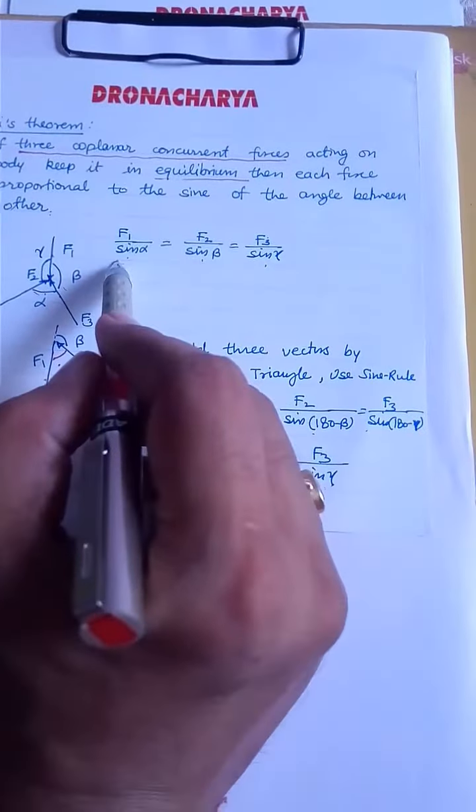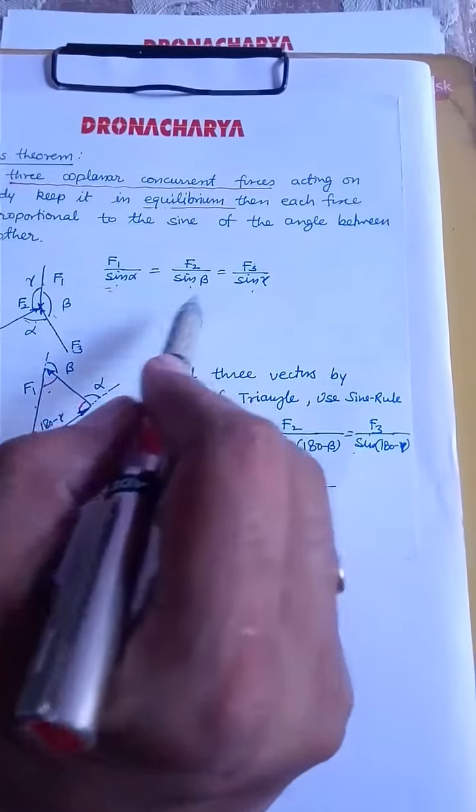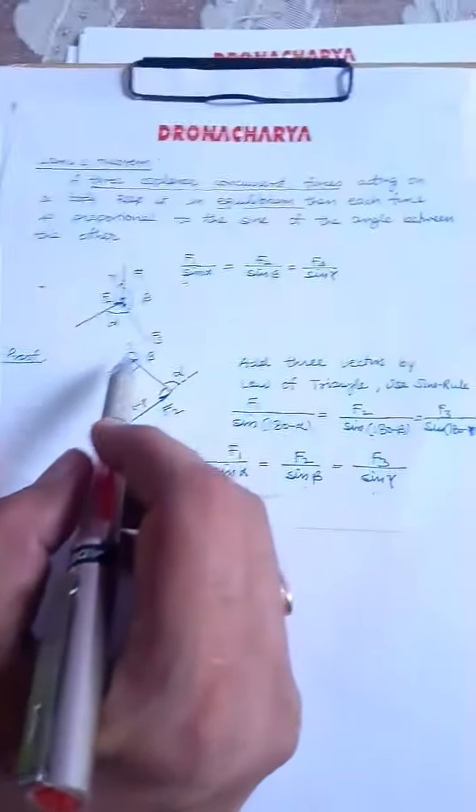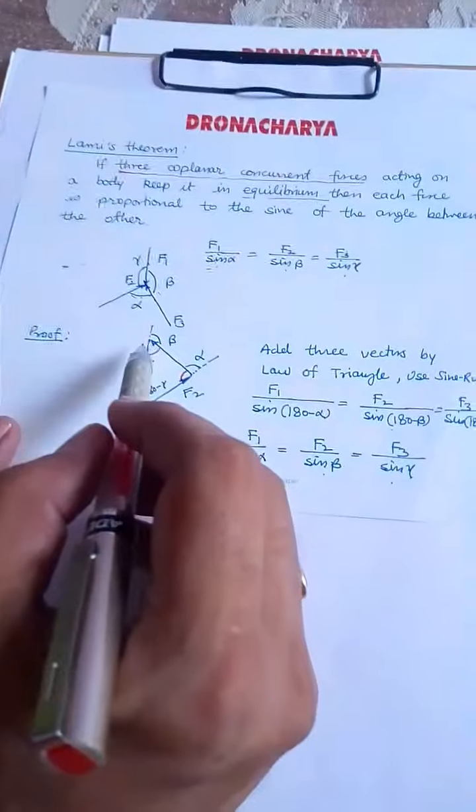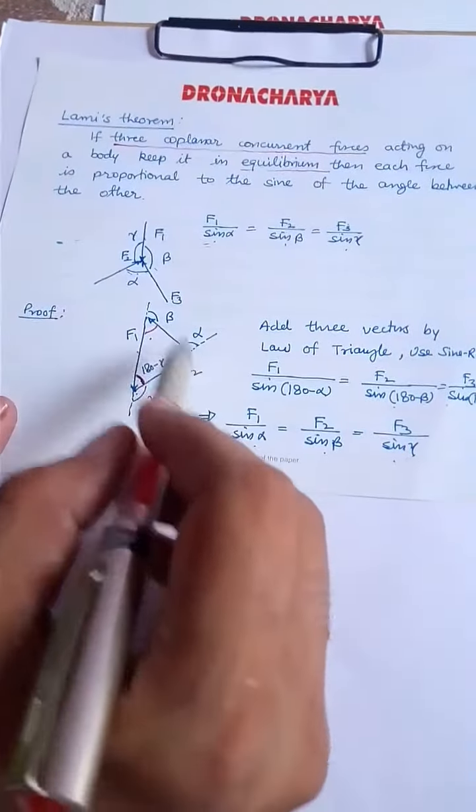Now how does it come? What is the background of it? It is very simple. It is a simple law of triangle. Let us understand the law of triangle along with sine rule. We can prove it.